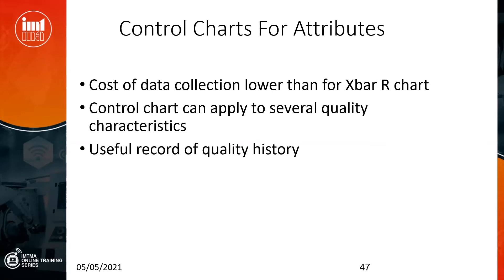There are some differences and advantages of attribute charts. One is that data collection is far easier, because we don't have to actually measure anything — it's either OK or not OK. You can also have several quality parameters combined in one chart, so you don't have to make too many charts. Another advantage is that the attribute chart is very concise. You can store records of attribute charts — a one month's chart can fit on one A4 page, whereas the X-bar R chart is a running chart that occupies a lot of space. So attribute charts can also be useful as a record of quality history over a period of time.